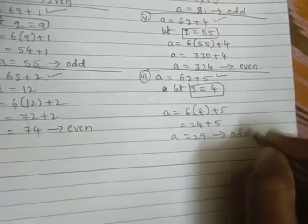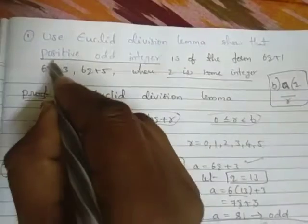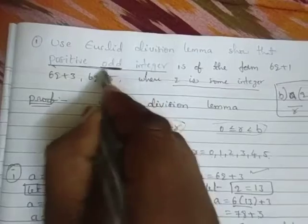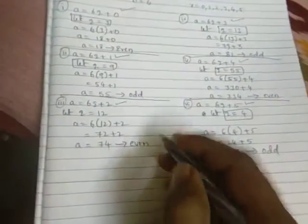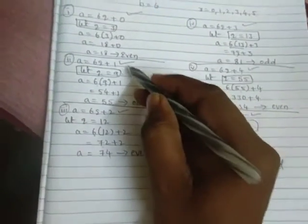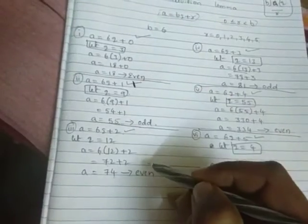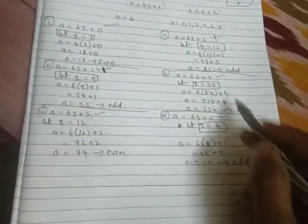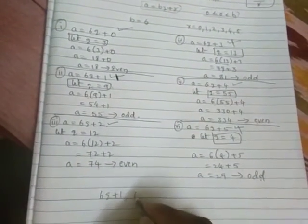Now check the question: positive odd integers. Now first check in this whichever odd will come. Yes, this one is odd, 6q+1. And this is even, this even, this not. This one 6q+3, this is even, this not, this one odd. Which ones? 6q+1 and 6q+3 and 6q+5.